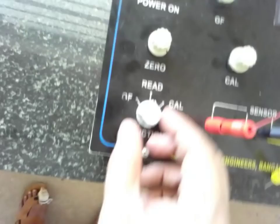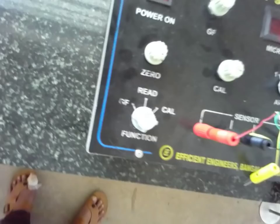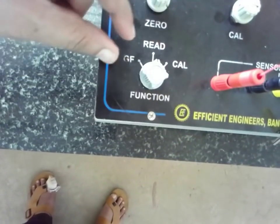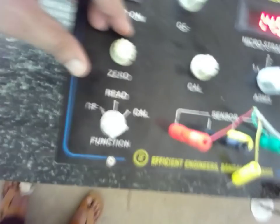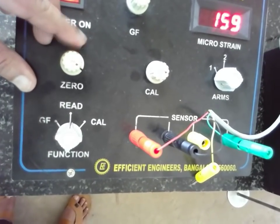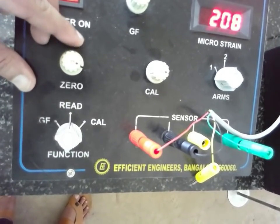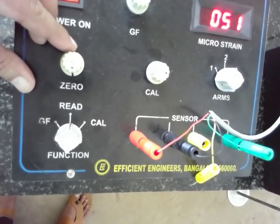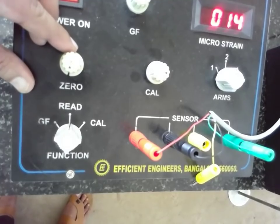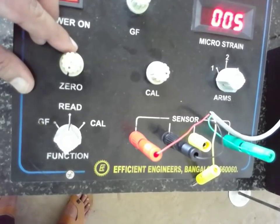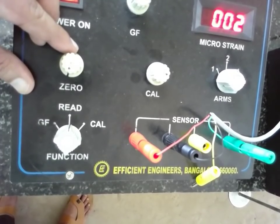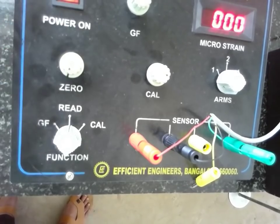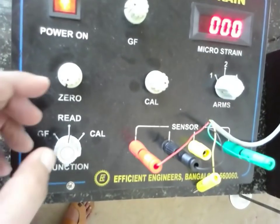So next, read knob. Bring it to the read. Read knob, make it with the help of zero knob. Make it zero. Zero. Again, zero. Again.